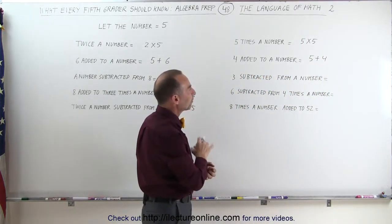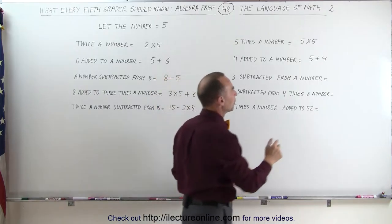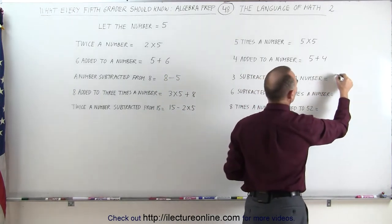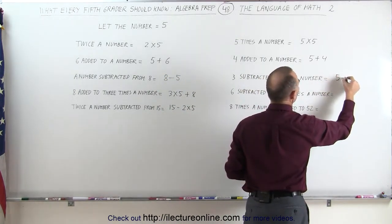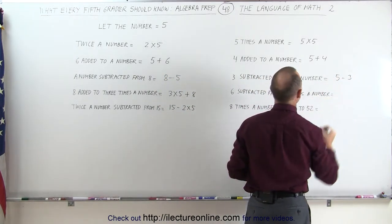3 subtracted from a number. We write the number first, and then we subtract 3 from that.